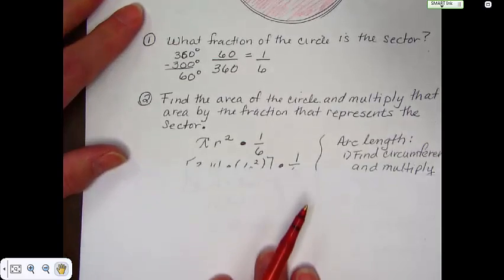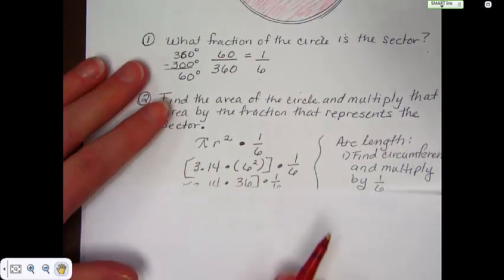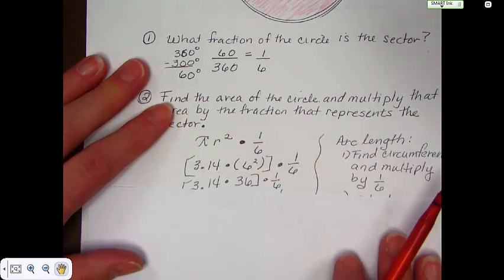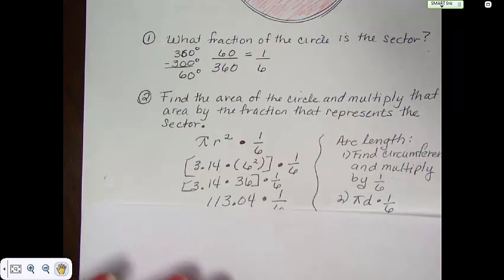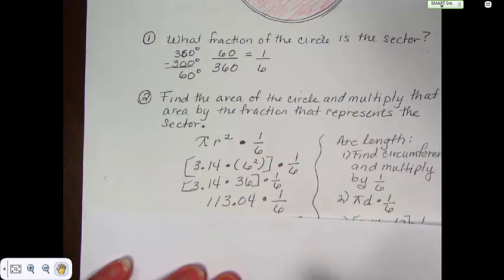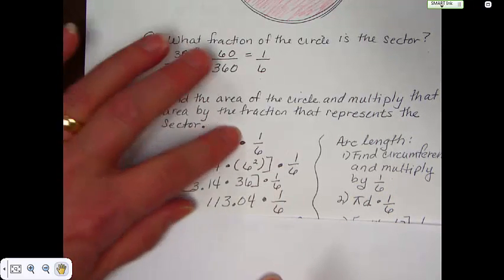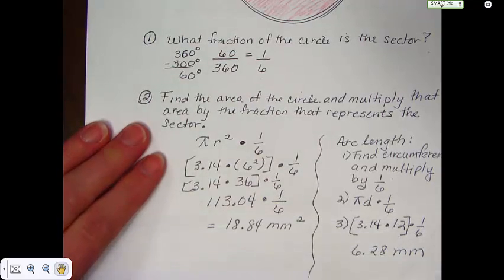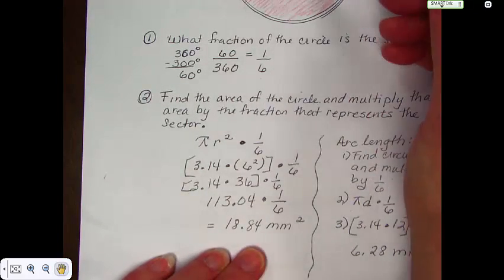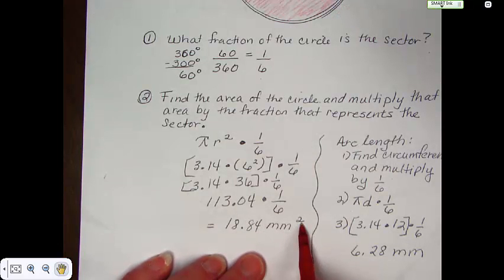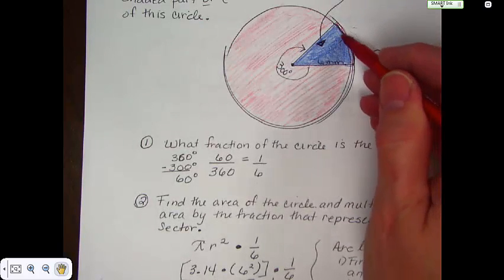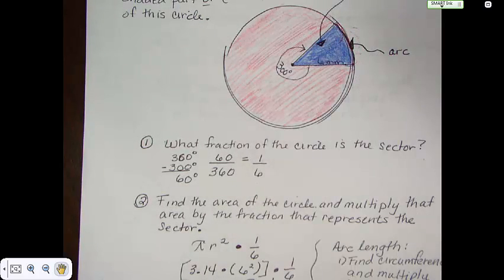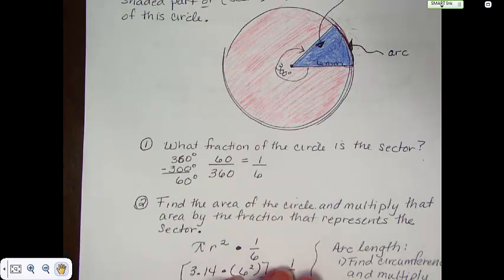If you want to find the arc length, you would find the circumference of the entire circle. You already know what part of the circle that that is. It's 1 sixth. So, you would find the circumference, pi d times 1 sixth. Over here is pi r squared times 1 sixth. You go through and do the work. You end up with this particular sector is 18.84 millimeters squared. That's the area. And the length of this arc up here, this arc right here from the edge to the edge, is 6.28 millimeters. Pretty easy stuff, really.